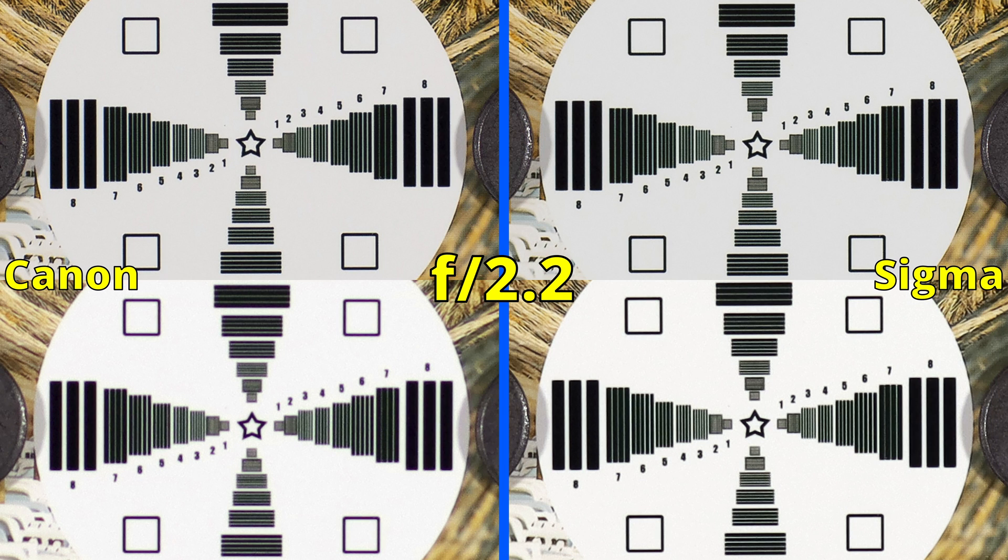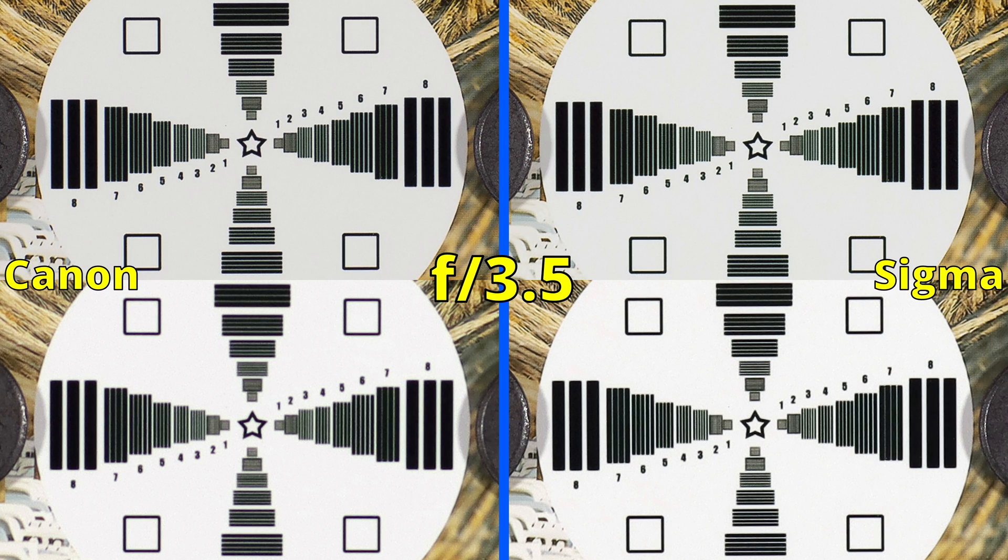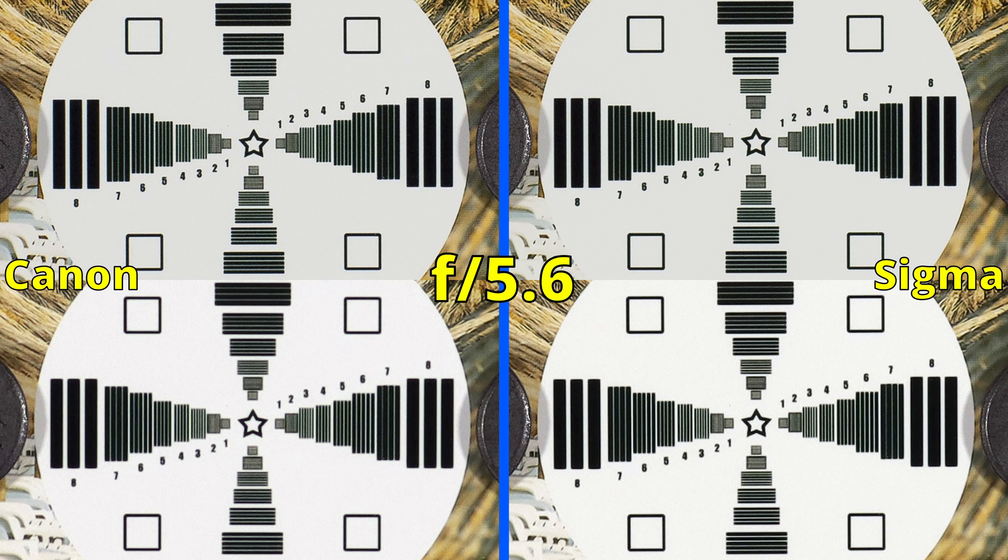At f2.2, we have similar performances on full frame. Below, we have good sharpness on the Sigma lens but the Canon lens is still struggling. Stopping to f2.8, we will now focus only on the Canon lens on APS-C because all the other images have the same sharpness. We see just a small improvement, ghosting still visible. We'll have to go all the way to f5.6 to see a good performance in the bottom left side.